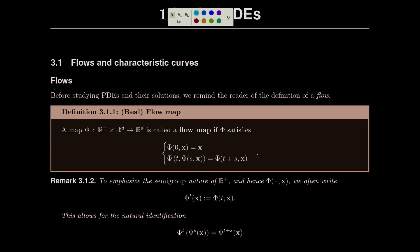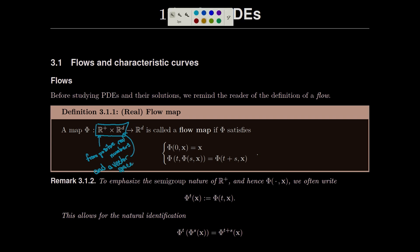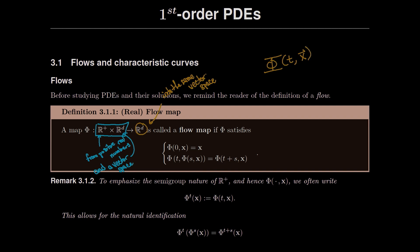There are three sections here. The first order PDEs for the most part show up in the third of these three. Section 3.3 will cover the general first order PDE that we can solve. Getting into section 3.1, I'm calling it flows and characteristic curves because to a certain extent these are the same thing. Characteristic curves are a one-dimensional flow. I want to talk about what a flow map is.